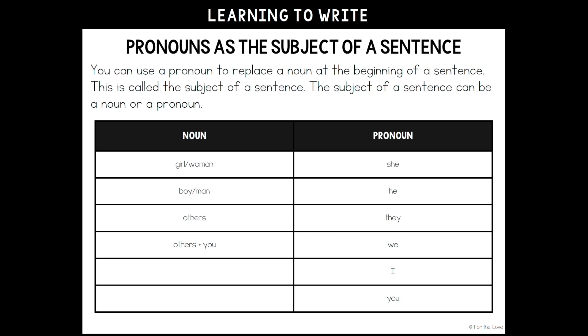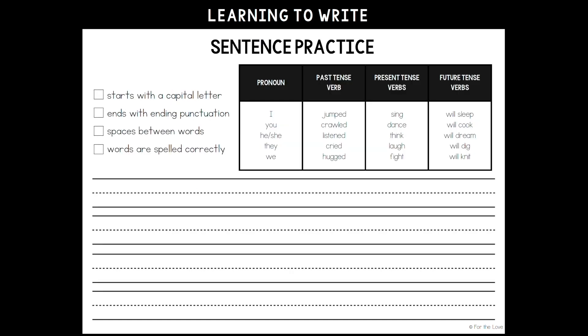For the I, students could put their own name. For the you, they could put the teacher's name, a friend's name — it doesn't really matter; you could even leave it blank. Just understanding who I is representing and who you is representing. Once students have that practice sheet information, either in their writer's notebook or on the worksheet, they are ready for sentence practice using subject pronouns.